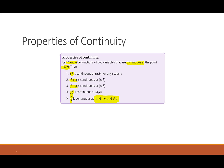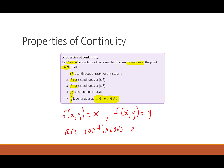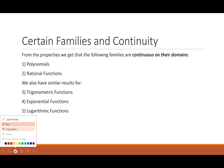A couple other things I want to point out: the function f(x, y) = x and f(x, y) = y are two functions that are continuous everywhere. You can use the epsilon-delta definition of the limit to prove that, but take my word for it. The reason I bring this up is that using these facts and the properties of continuity, we get the following nice result. The following function families are continuous on their domain, meaning as long as your point is in the domain, your function is continuous there.